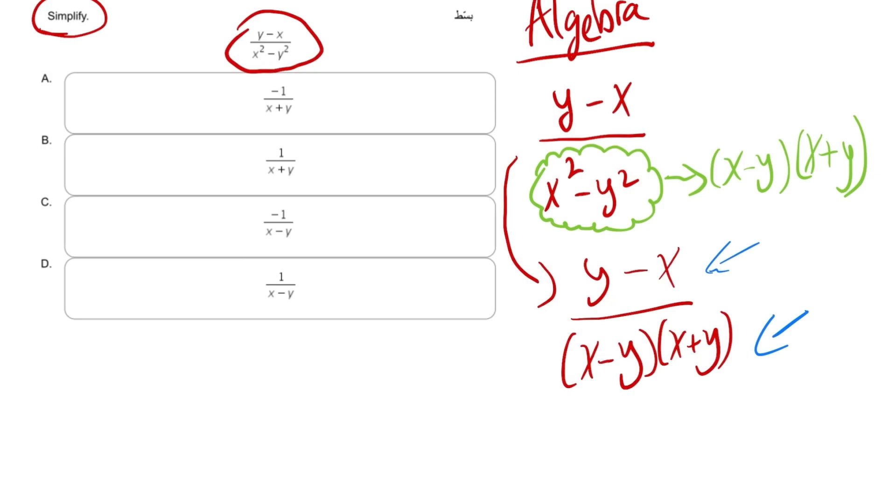Can we make them look the same or close to each other? So if I'm going to do this, let's say I take the minus outside from the numerator, the top part, I'll end up having x minus y over x minus y into x plus y.